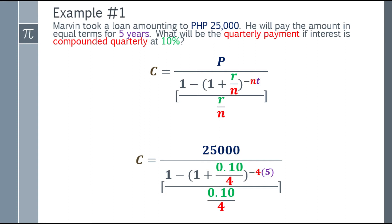It is color-coded to guide you. For the complex fraction in the denominator, starting with 1 minus the parentheses: that will be 1 minus the quantity (1 plus 0.10 over 4). The exponent is negative 4 times 5. The 0.10 comes from the rate of 10% — you convert it to decimal by dividing by 100, removing the percent sign, giving 0.10. The 4 is because it's quarterly, so N equals 4. And the time is 5 years. Time is always expressed in years.